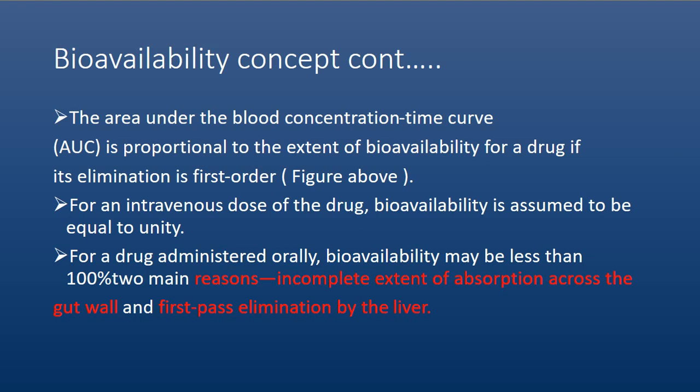The area under the blood concentration-time curve, AUC, is proportional to the extent of bioavailability for a drug if its elimination is of first order. As we said, for one intravenous dose, bioavailability is assumed to be equal to unity — equal to one. But for a drug administered orally, its bioavailability will be less than one. There are two main reasons: first, incomplete extent of absorption across the gut wall, and second, first-pass elimination by the liver.